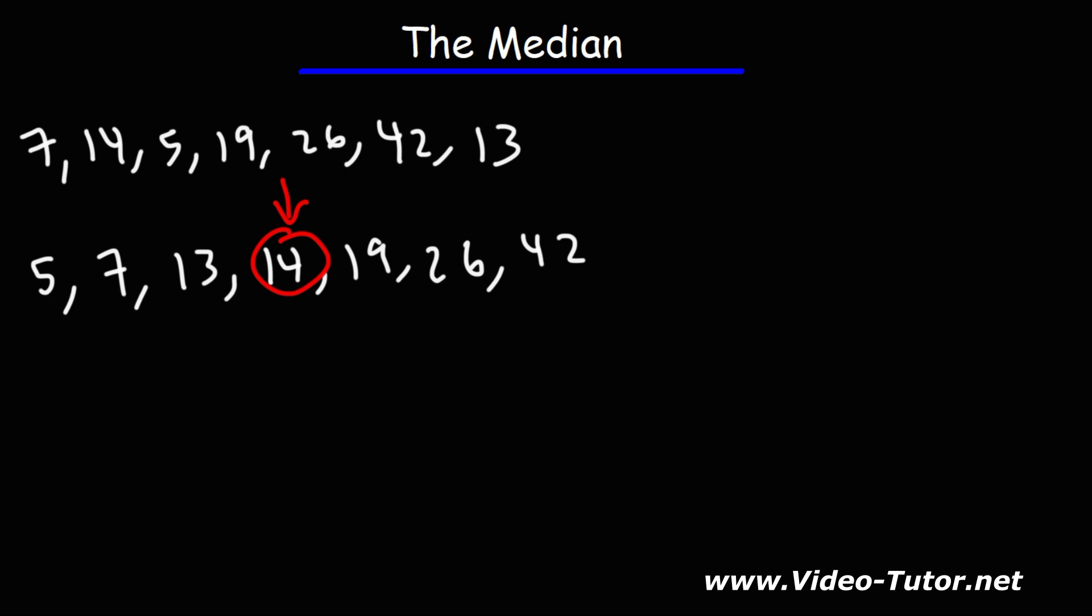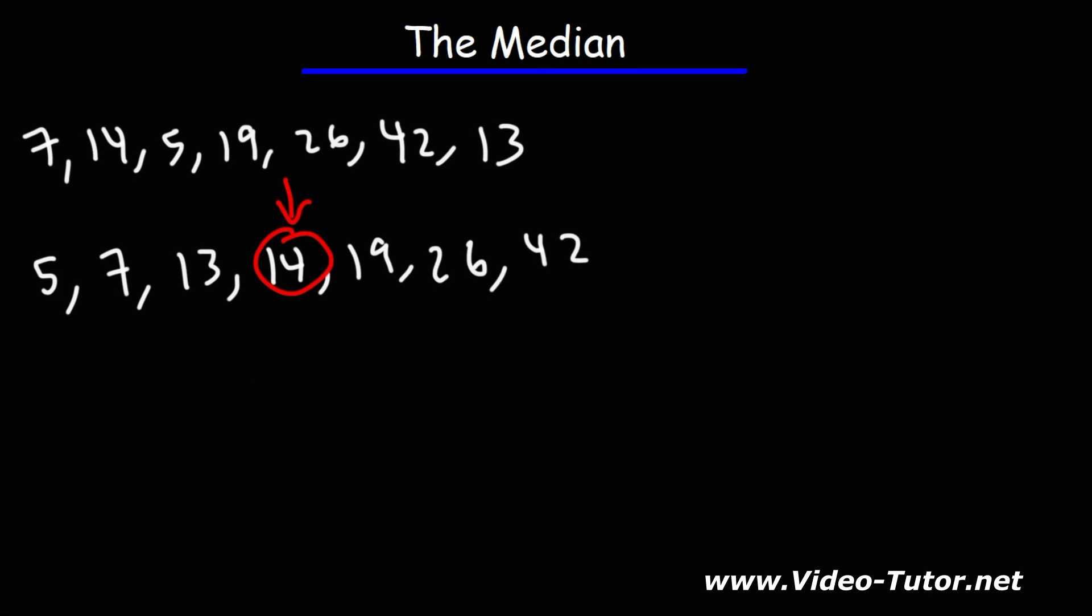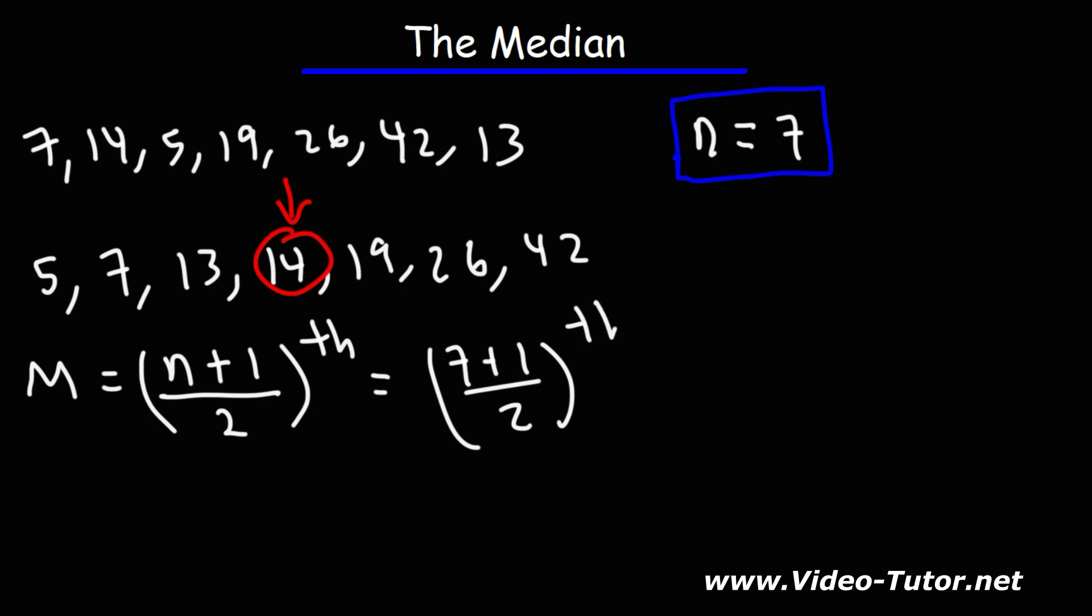Now, there's another way in which you could determine the median. Here's the formula for it. So it's going to be the value of the n plus 1 over 2 term. In this case, we have 7 numbers in this set. So n is 7. So, 7 plus 1 divided by 2. 7 plus 1 is 8. 8 divided by 2 is 4. So the median is going to be the value of the 4th term. In other words, the median is going to be a sub 4.